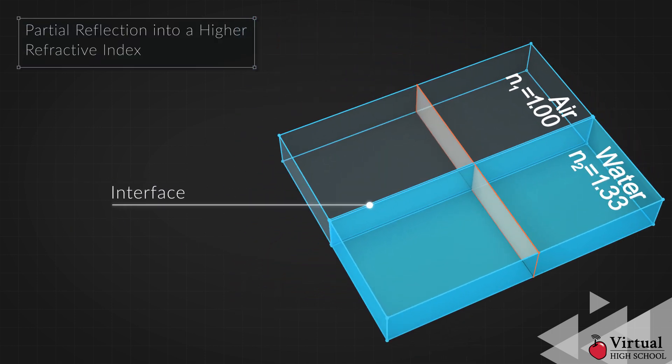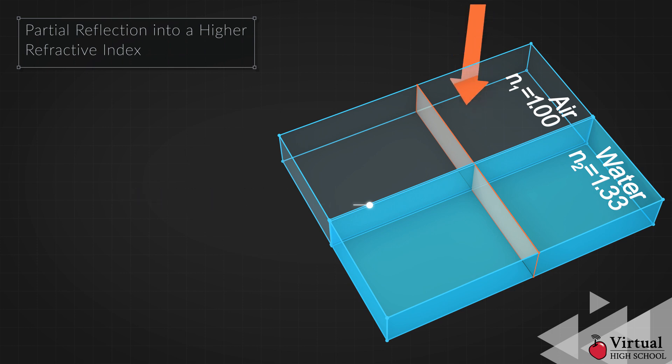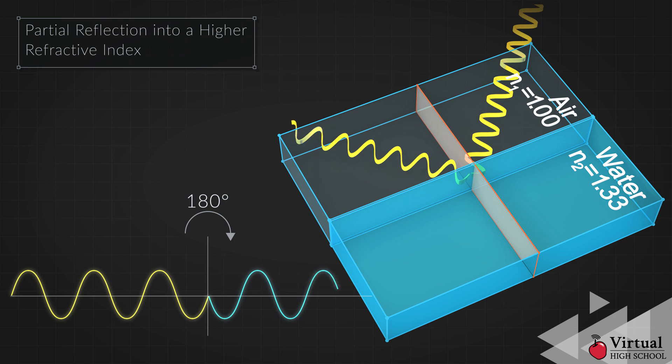When the light hits the interface between the air and water, some of it is reflected. When the second medium has a higher refractive index, the reflected wave is flipped 180 degrees or undergoes a phase change.